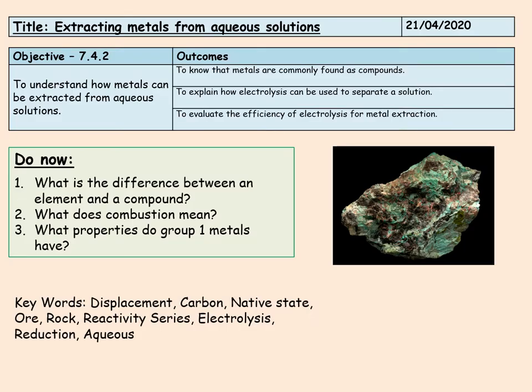We finish off today just to have a look at the three questions that we've got here. So the difference between an element and a compound. An element is one type of atom on its own. Compound is two or more different types of atom that are chemically bonded. Number two, what does combustion mean? Combustion is burning. And number three, what properties do group one metals have? Group one metals primarily are all very reactive metals.